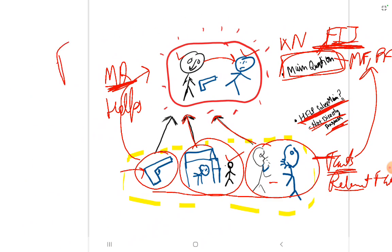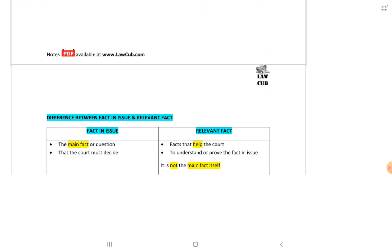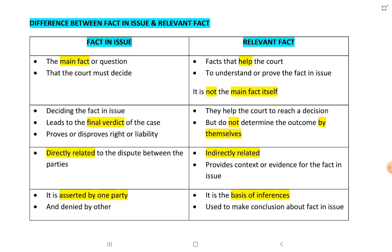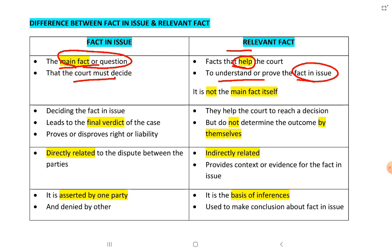The difference between fact in issue and relevant facts: The fact in issue is the main fact or question that the court must decide. Relevant facts are the facts that help the court understand or prove the fact in issue — they are not the main fact themselves, but they help the court prove or understand the fact in issue.